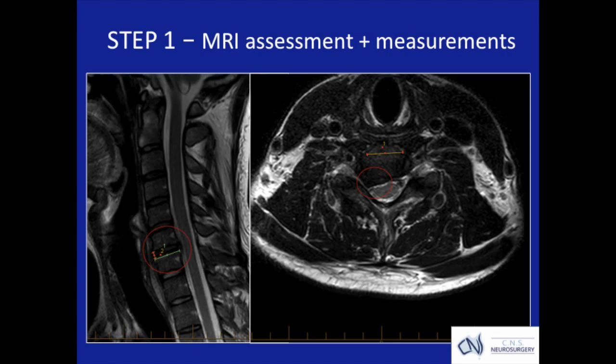The first step is to obtain a good understanding of the anatomy via the MRI and to take measurements of the pathology shown in that anatomy, because those measurements will allow one to customize the prosthesis that will eventually be used.